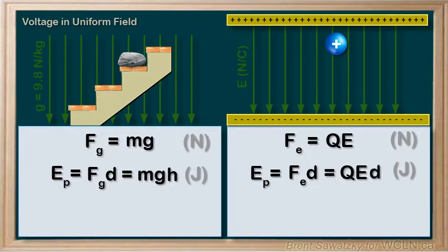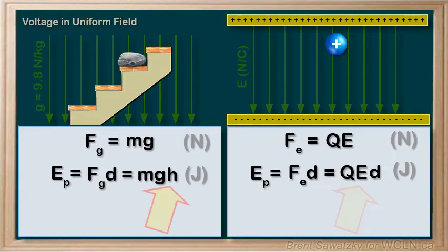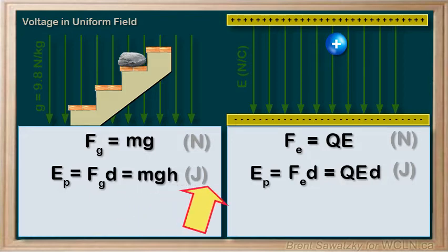Let's consider some similarities between these equations. We have a field strength — g over here and e over here. We have a displacement — h over here and d over here. And then we have an extra characteristic specific to the rock or charged particle: mass for the rock in kilograms, or charge for the particle in coulombs.